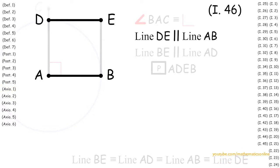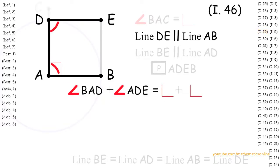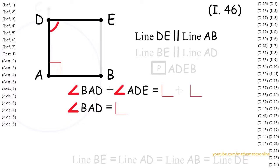Next, looking at the parallel lines DE and AB, we can see that both lines are intersected by line AD. Then by Proposition 29 the sum of the two interior angles on the same side are congruent to two right angles. Therefore angle BAD plus angle ADE are congruent to the sum of two right angles. Now angle BAC is a right angle, which can also be called angle BAD. This means that angle ADE must also be a right angle, since angle BAD plus angle ADE are congruent to the sum of two right angles.